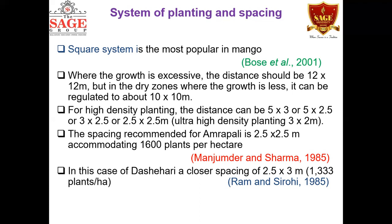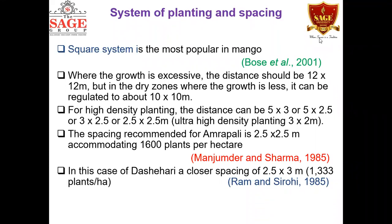In mango, there are different systems of planting such as square system, rectangular system, hexagonal system, contour. These different systems of planting are available. The square system of planting is very popular because it is very easy to lay out on plain land. It is a very popular method of planting for mango.